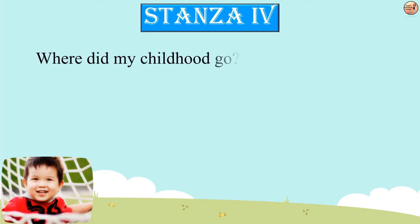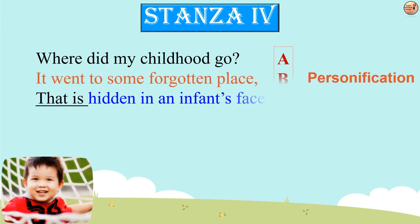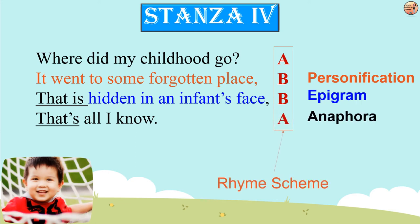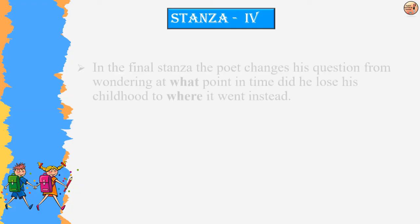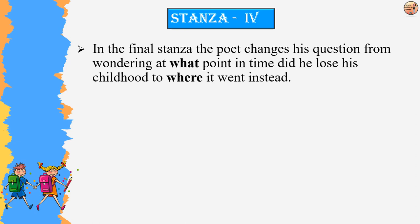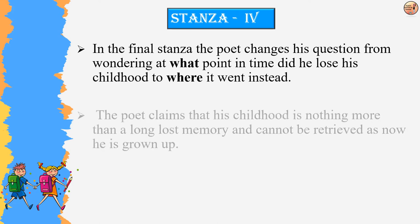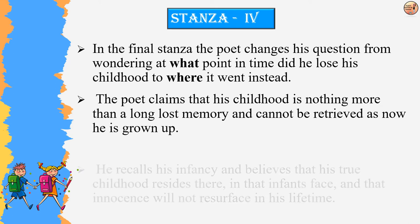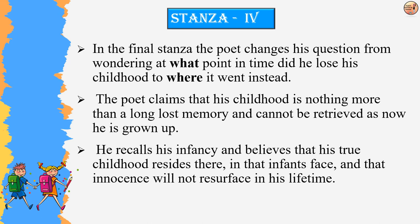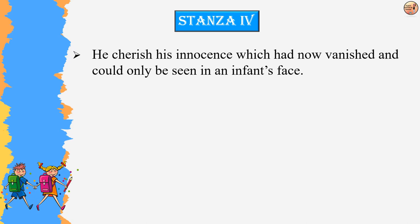Stanza 4: 'Where did my childhood go? It went to some forgotten place, that is hidden in an infant's face. That's all I know.' The poet ponders questions which many might have faced. Ultimately, he realizes that his childhood has left him forever and might never return — it is merely a memory. In the final stanza, the poet changes his question from wondering at what point he lost his childhood to where it went instead.